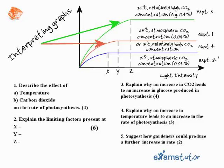Number two: explain the limiting factors present at X, Y, and Z. If I just indicate at X, we can clearly see if we increase to a limit above X, we still get an increase in rate. Therefore, the limiting factor at X must be light intensity because when we increase the light intensity, we get an increase in rate.